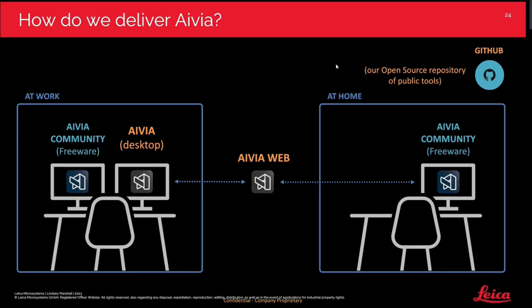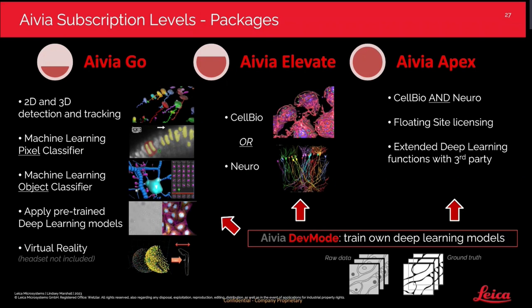Avia is an annual subscription with three basic packages: Go, which contains quite a lot of features; Elevate, which can be split into Cell Bio for cell compartmental analysis or Neuro for neuron analysis recipes; and Apex, the full suite combining Cell Bio and Neuro together. Because we understand that bringing AI access for all is important, there is also an Avia Dev Mode add-on to train your own deep learning models, which can be added to any available package.